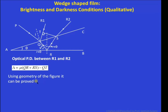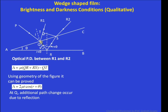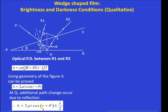Using the geometry of the figure, it can be proved that the path difference delta equals 2μt·cos(r + θ). This expression can be derived but we are focusing on the qualitative discussion here. Additionally, at point Q an extra path change occurs due to reflection — because the ray reflects from the film surface into air, there is a phase change of π corresponding to a path change of λ/2. Therefore the total path difference is: Δ = 2μt·cos(r + θ) ± λ/2.